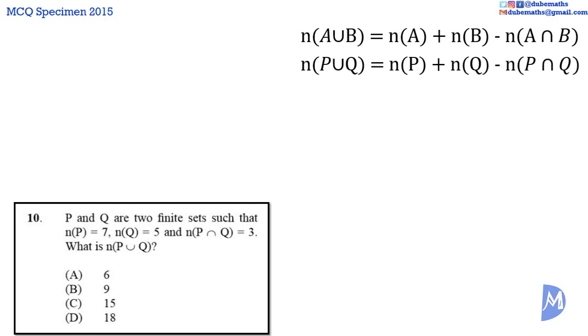subtract the number of elements in P intersect Q. We are given that the number of elements in P is equal to 7, the number of elements in Q is equal to 5, and the number of elements in P intersect Q is equal to 3.